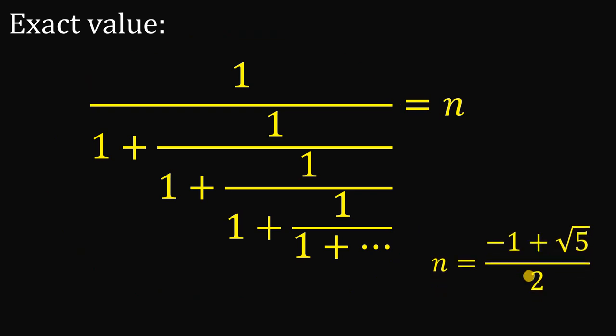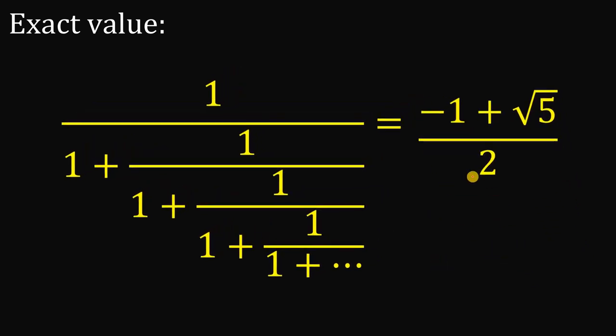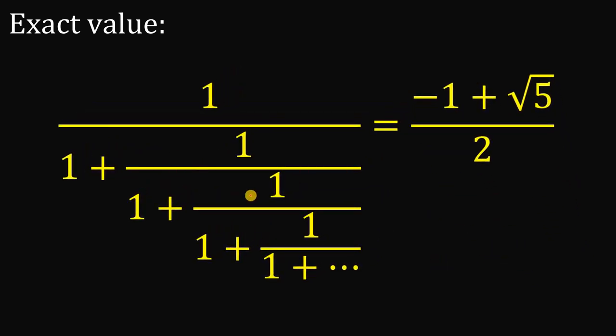And that is our answer to this question. The value of the expression 1 over 1 plus 1 over 1 plus 1 over 1 plus, until infinity, must be equal to negative 1 plus square root of 5, over 2. And as always, we are done.